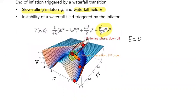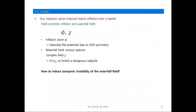This figure shows how hybrid inflation occurs. The waterfall transition is a second-order transition, so it is very smooth. This is the idea of hybrid inflation.